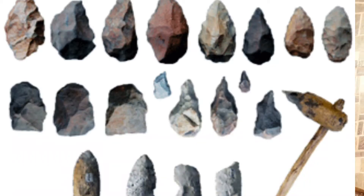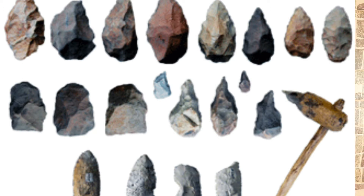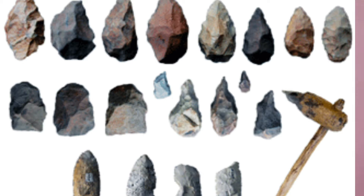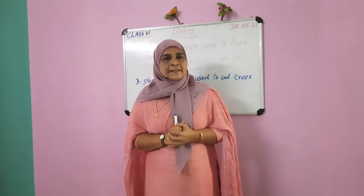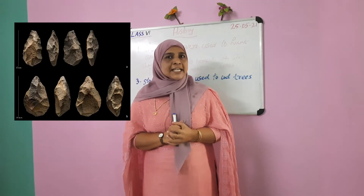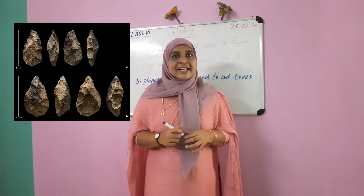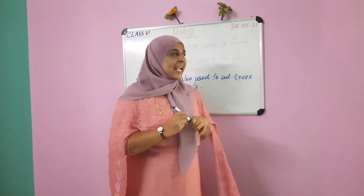Look at these pictures. These are the types of stone tools early people used. The main object used by early people was stone. They used stone for their survival, so that age is called the Stone Age.